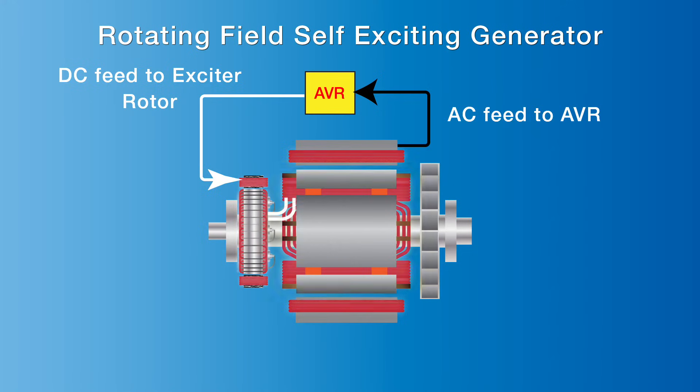This rotating magnetic field within the main stator windings causes an electromotive force, or EMF, or electrical current to be induced into the stator windings. This current is then fed to the connected electrical equipment making up the electrical load.